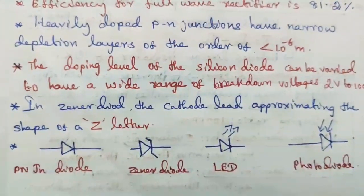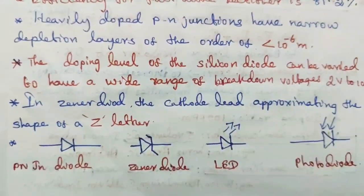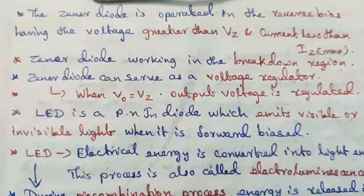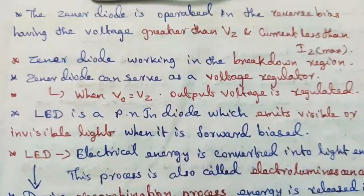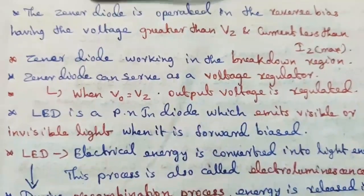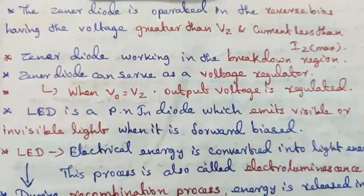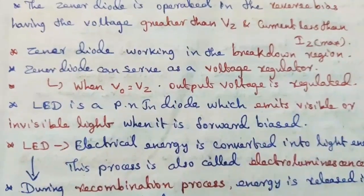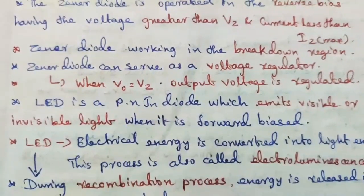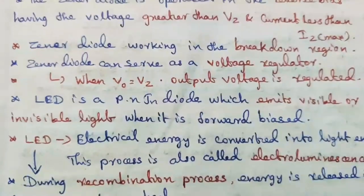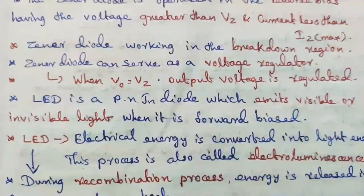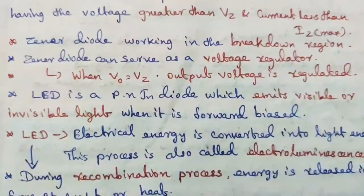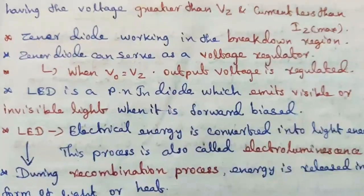The symbols of different types of diodes are p-n junction diode, Zener diode, LED, and photodiode. The Zener diode is operated in the reverse bias having the voltage greater than Vz, Zener voltage, and current less than Izmax, maximum Zener current. Zener diode working in the breakdown region can serve as a voltage regulator when output voltage V0 is equal to Zener voltage Vz. The output voltage is regulated.